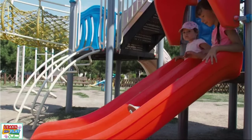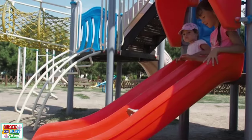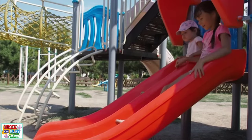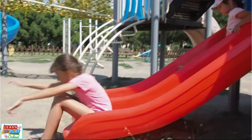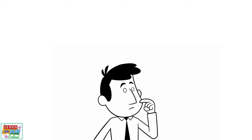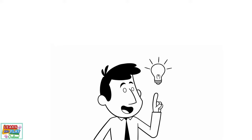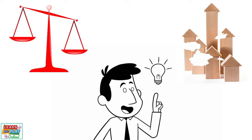When you are at a playground going down a slide, you are possessing gravitational potential energy when you are sitting at the top of the slide. That gravitational potential energy turns into kinetic energy as you push off from the top of the slide. There are two factors which determine how much gravitational potential energy an object can have: the mass of the object, as well as the height from which it is elevated.